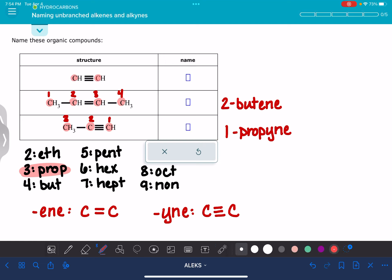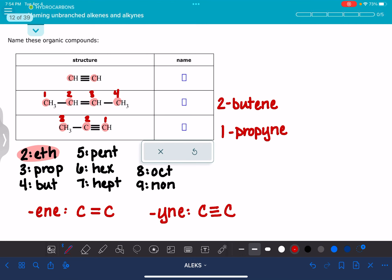So a two-carbon chain means that it is going to be an eth. We're going to number the carbon chain to give the triple bond the smallest possible number, and it doesn't matter if we go from left to right or right to left. We're starting at carbon number one.